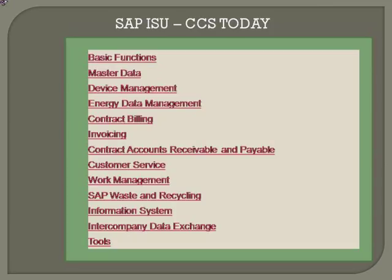Subsequently, keeping in view changes that happened in the industry — basically the deregulation aspect — today SAP ISU has the original CCS plus many additional components like energy database management. We also have intercompany data exchange and integration with AMI, the Automatic Meter Reading Infrastructure. SAP ISU CCS has full-fledged R3 components used throughout ISU: plant maintenance, materials management, sales and distribution, and warehouse management if required.